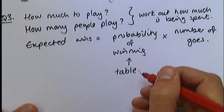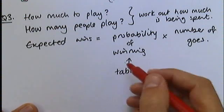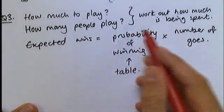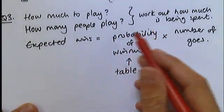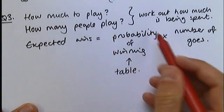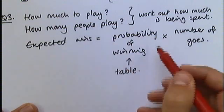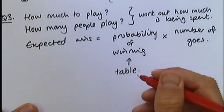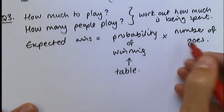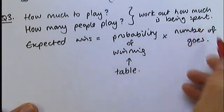But we want to know the number of 11s out of how many possible answers. So the probability of winning is going to be a fraction. The number of times you can get 11 out of the total number of answers you could get. And multiply that by the number of goes, the number of people playing the game.